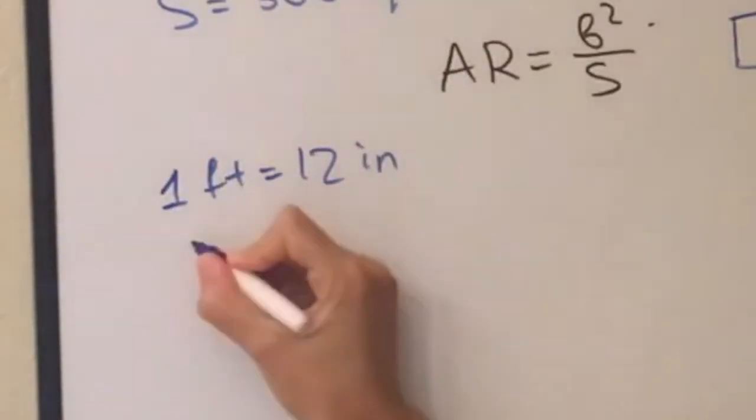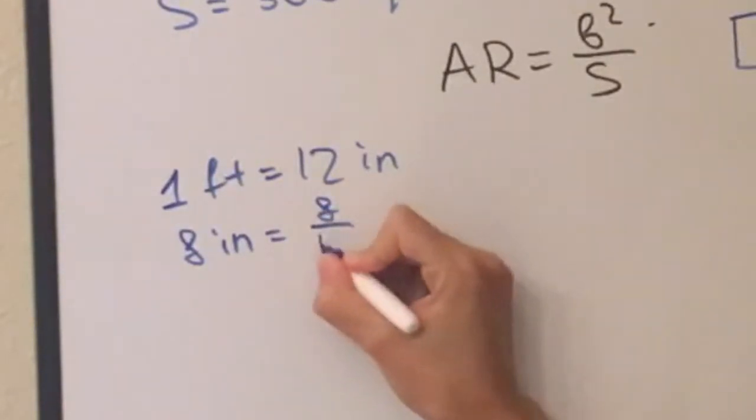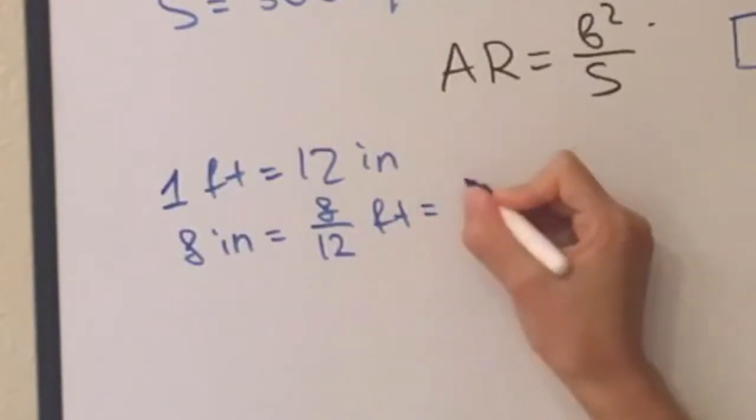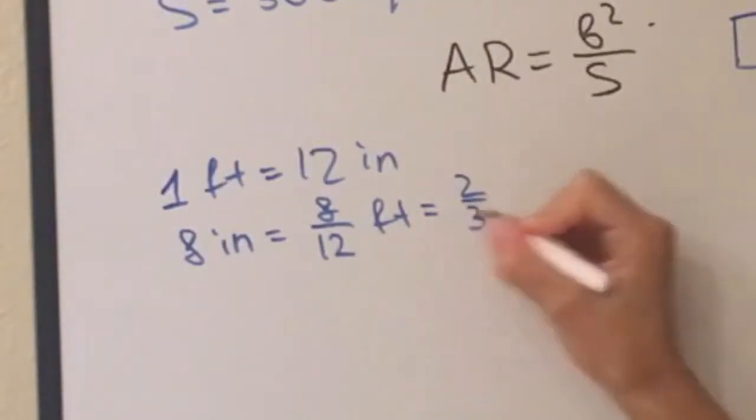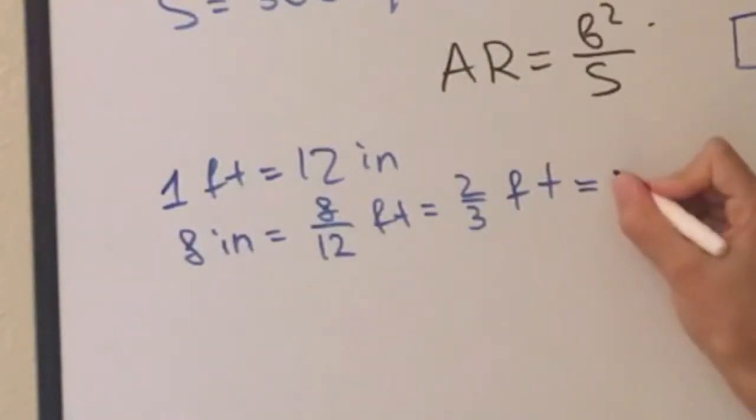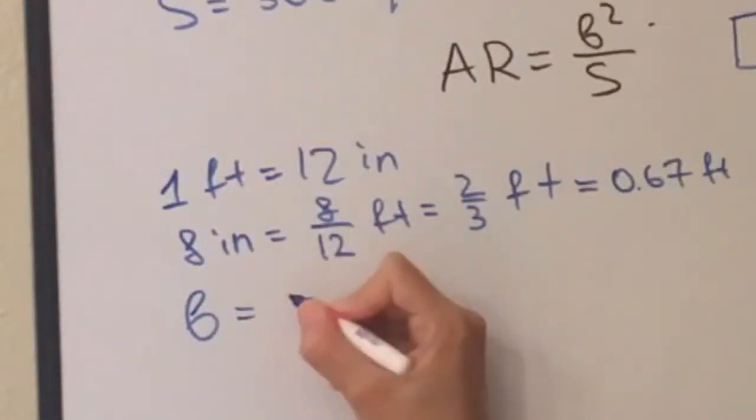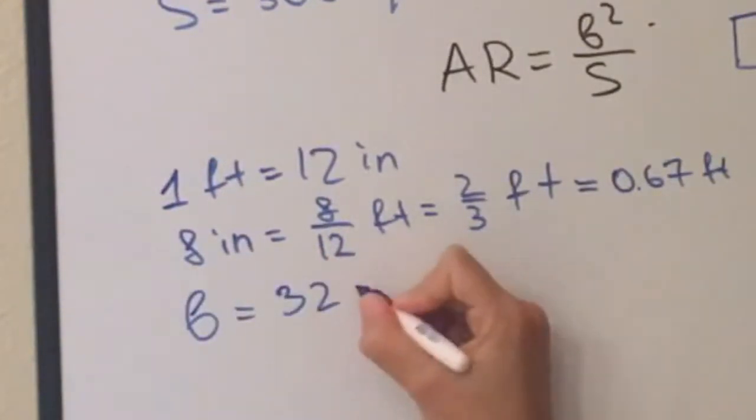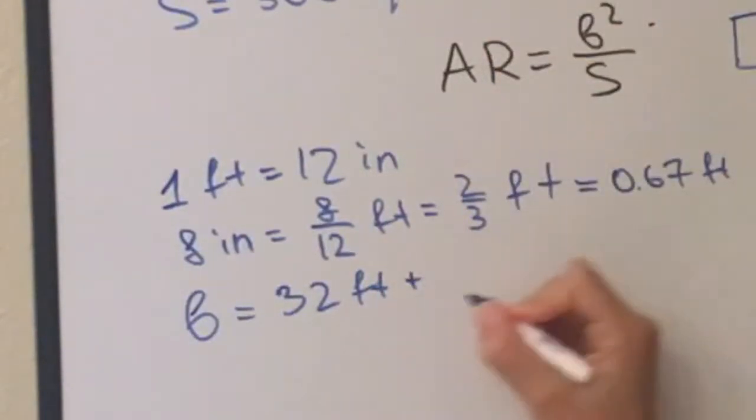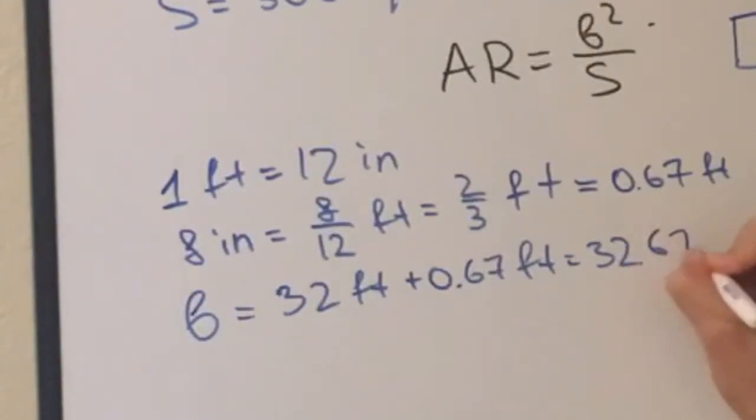So this means that 8 inches will be 8 divided by 12 feet, which we make simpler by dividing by 4 which gives us 2 thirds of a foot. And we transfer it to decimals, 0.67 feet. So the wingspan for F-16 would be 32 feet plus 0.67 feet, which gives us 32.67 feet.